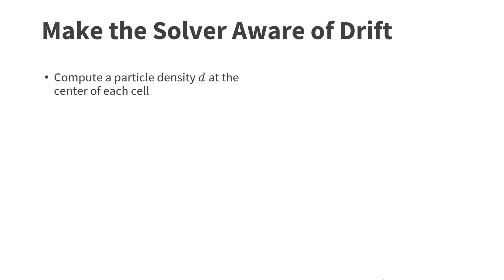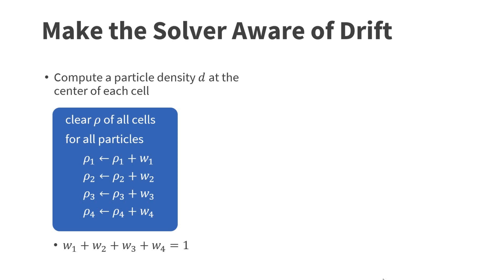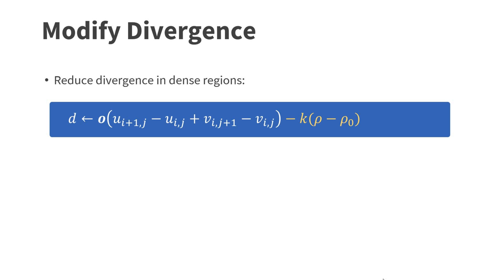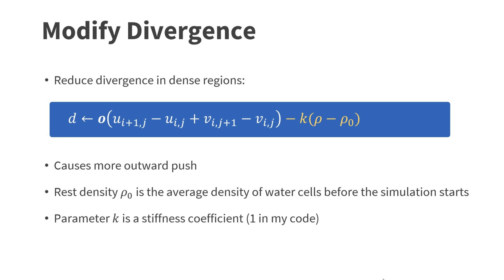To fix this, we compute particle densities at the center of each cell. To compute it, we first set all density values to zero. Then we run through all the particles. Each particle adds its interpolation weights to the four corners. Since the four weights add to one, we get a smooth estimate of the number of particles in each cell. Now we use the particle densities to modify the divergence. We reduce it in dense regions. This has the effect that the solver creates more outward push in dense regions. The rest density, ρ₀, is the average density of water cells before the simulation starts. The parameter k is a stiffness coefficient, which I set to one in my code.